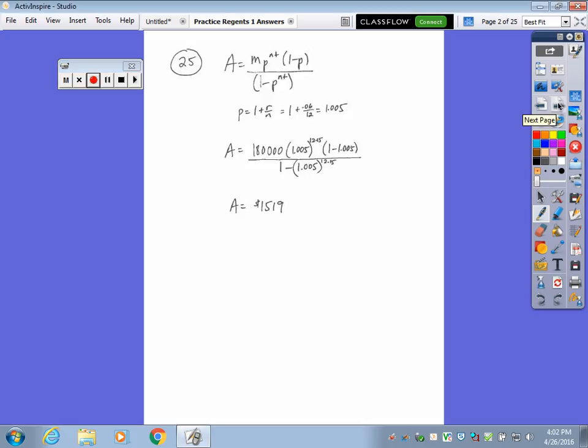So the first question, question 25, has to do with mortgage payments, monthly mortgage payments. You're given a formula, you're given the interest rate, you're given the fact that it's compounded monthly, you're given the fact that you borrowed $180,000 for 15 years. And the question is, what would be the monthly mortgage payment?